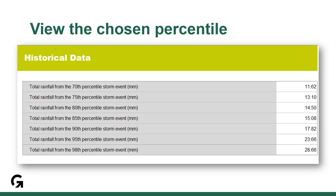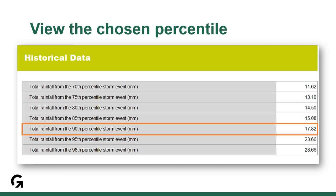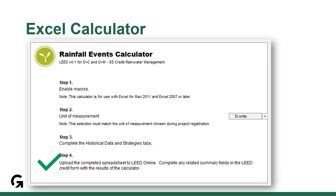Once you've completed the previous steps, you can select your chosen percentile on the historical data tab and view the total rainfall expected from the storm event. It is the precipitation amount that the percentage of rainfall events will not exceed, represented by a rainfall depth in millimeters. Please always provide the calculator in Excel, not a PDF of the pages. Reviewers can often correct errors to confirm compliance without waiting for required input from your team.